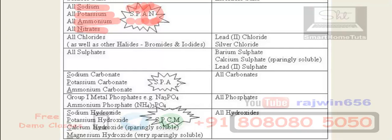All chlorides will be soluble. Lead chloride is insoluble, silver chloride is insoluble. All sulphates also will be soluble. The insoluble sulphates are barium sulphate, calcium sulphate which is sparingly soluble, and lead sulphate. Of course, we have seen here SPAN, so all of these carbonates also will be soluble. Rest all carbonates will be insoluble.